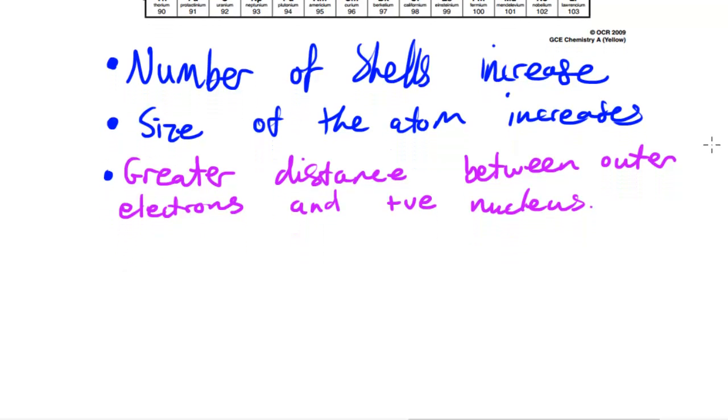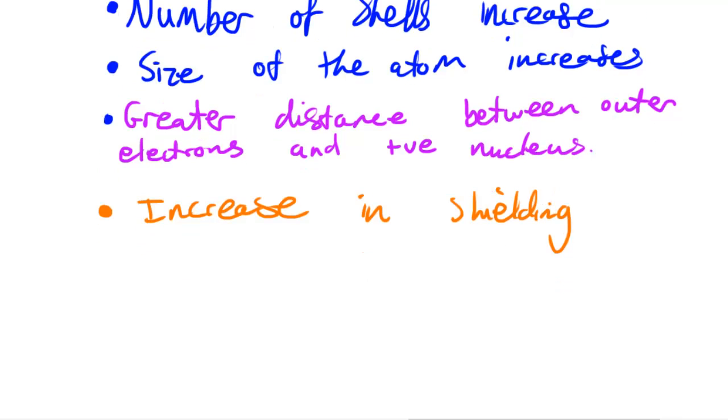Now, one of the other things which happens is that because the number of shells are increasing, shielding increases as well. So there's going to be an increase in shielding as you go down the group. And this is going to mean that the outer electrons are less strongly attracted to the nucleus.